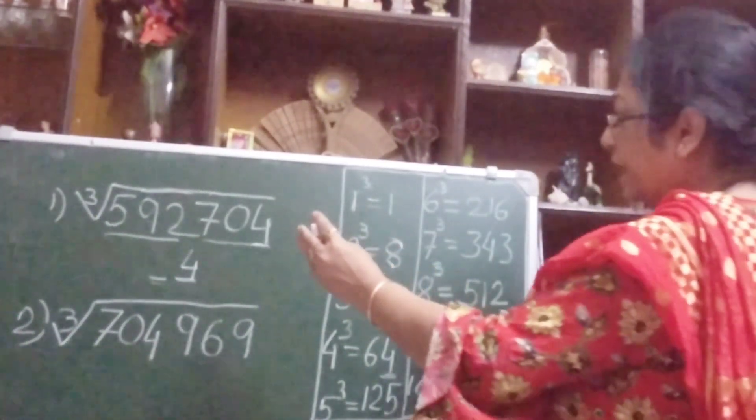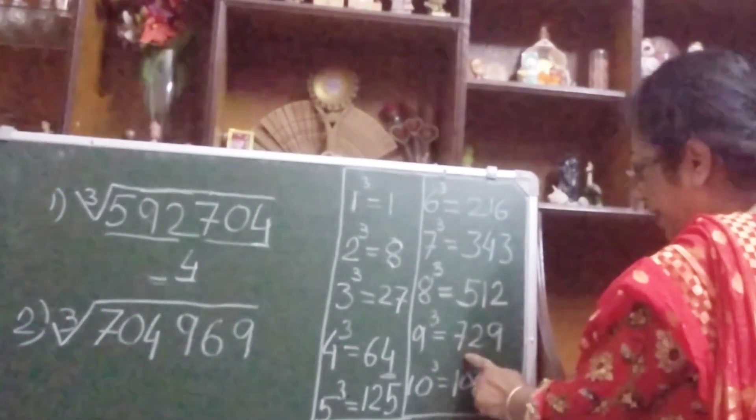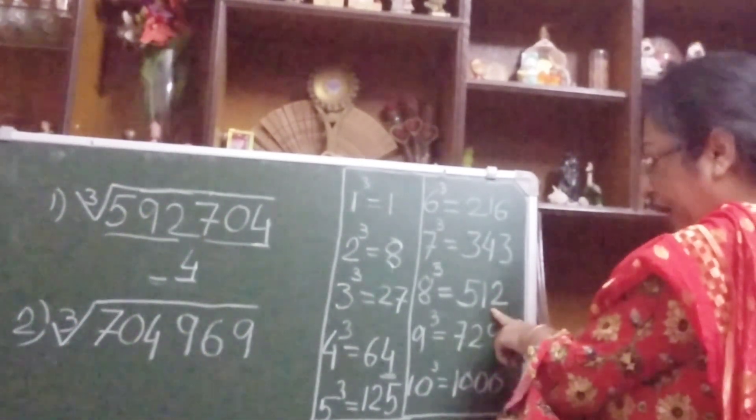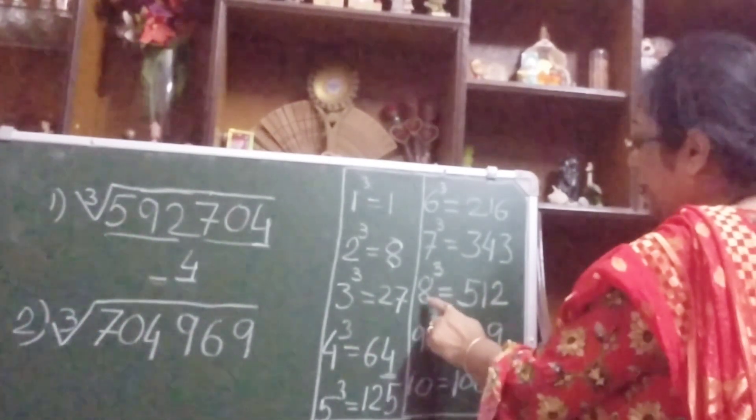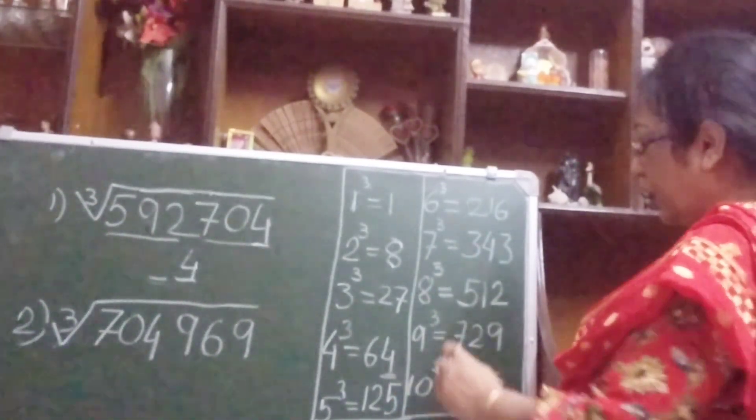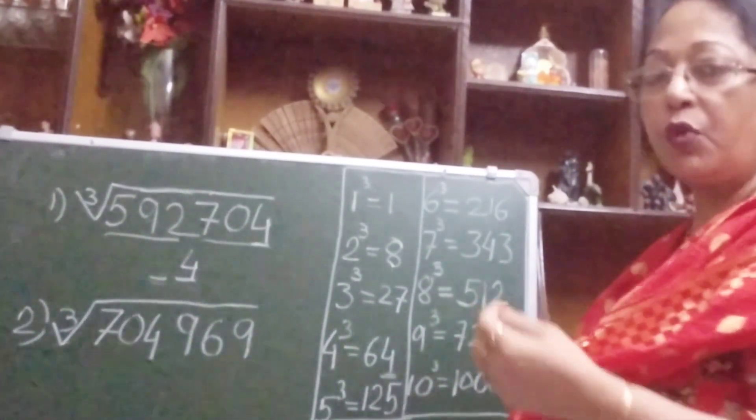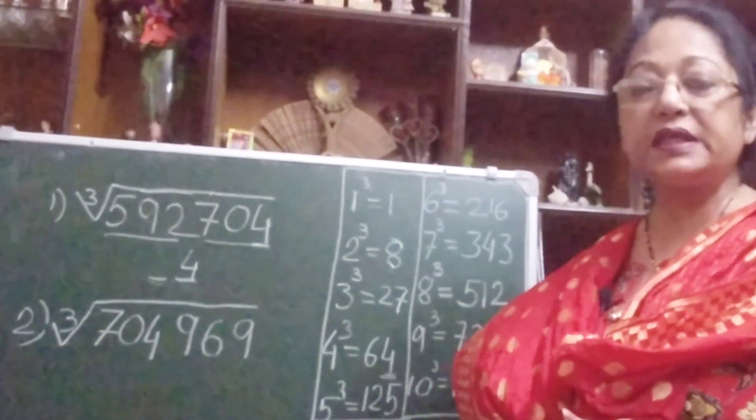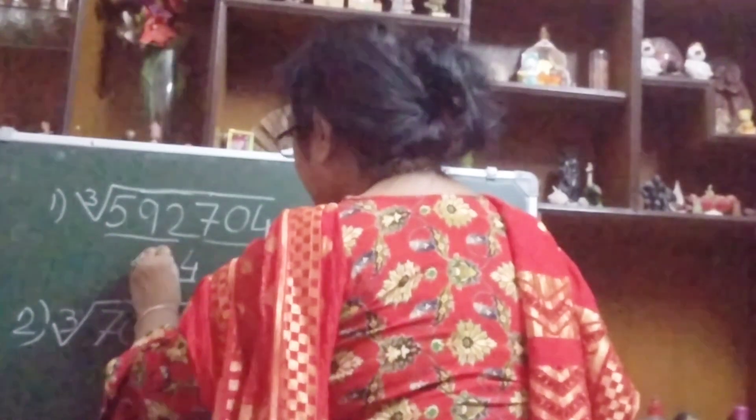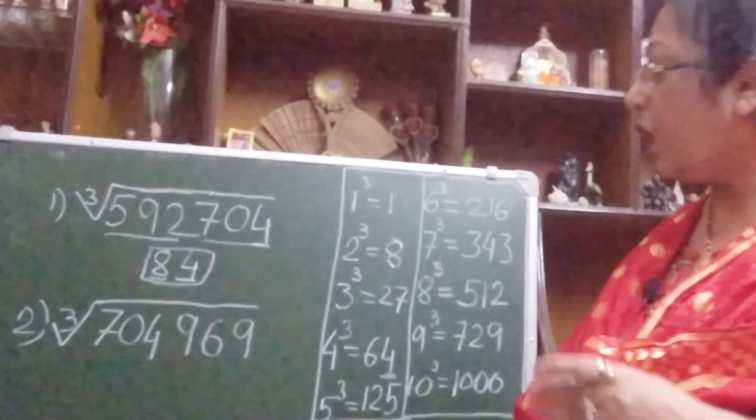Now we have to find out what will come in the tens place. Now you see these 3 numbers, that is 592. Where you see, 592 will come between 512 and 729, between these two. And these two are coming from 8 cube and 9 cube. So always what you will do, between these two numbers 8 and 9, whichever is the smallest one you take that one. So between 8 and 9, 8 is the smallest one, so you write here simple 8. So this is your answer. Very easy.